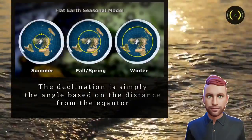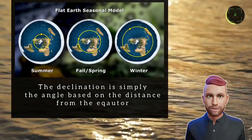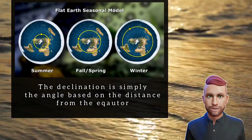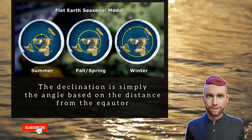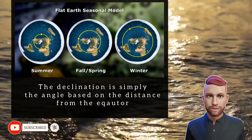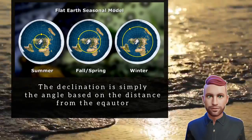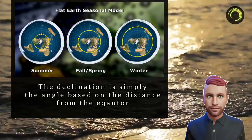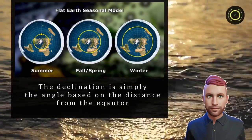What is declination, you might ask, and how does it work on a flat Earth? Simple. The declination is simply the angle based on the distance from the equator. So if you're in the Northern Hemisphere and the Sun is closer to you, it is summer. If it's further away, it gets to fall and spring, and obviously the furthest away is winter. This is just the total opposite for us in the Southern Hemisphere.